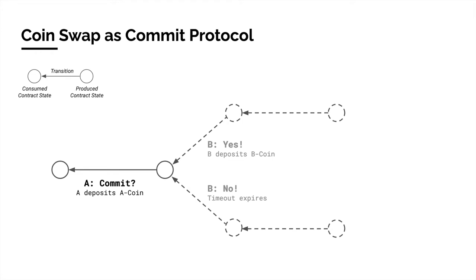Let us now consider how we can implement a coin swap contract as a blockchain program. Since all transactions in the blockchain are in one single global order, one of the actors must always commit funds first — in this case Alice, as shown below. However, this can potentially open the initiating actor to adversarial actions from the counterparty, who may not cooperate or not show up. We can solve this by designing the contract as a commit protocol, as shown below.